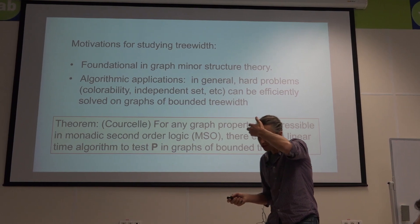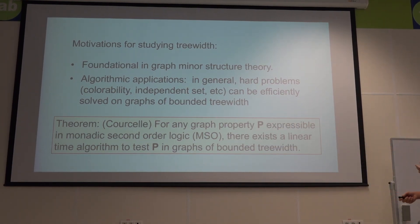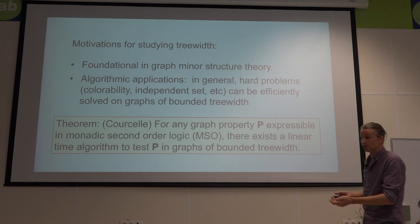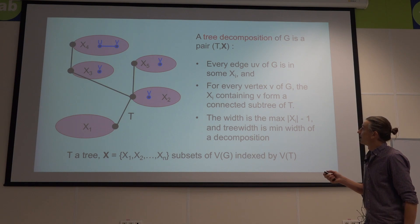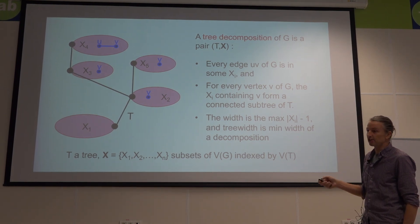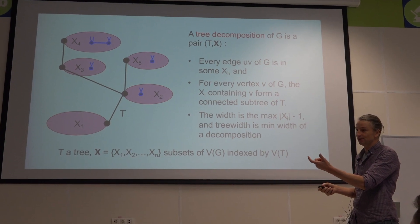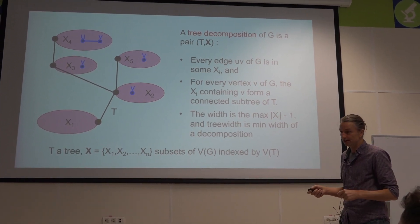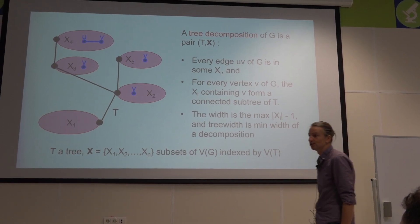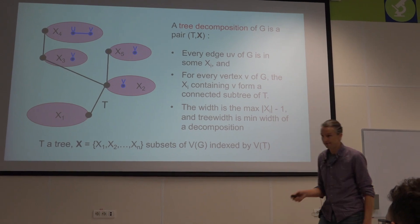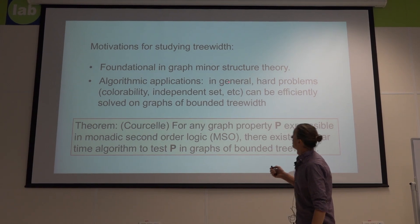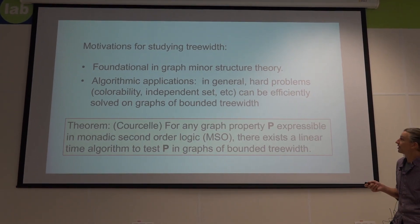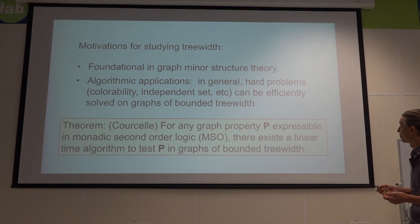Today we're primarily concerned with how tree width is really the foundation of the excluded minor theorem of Robertson-Seymour. The tree width of a tree is one: you have to put one edge in each bag, so every bag must have size at least two, and the minus one factor is there to force trees to have tree width one.